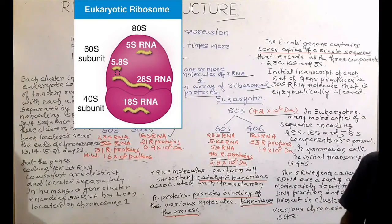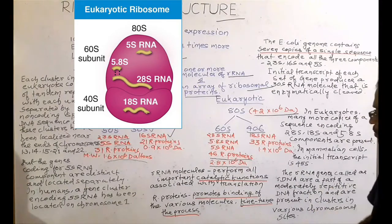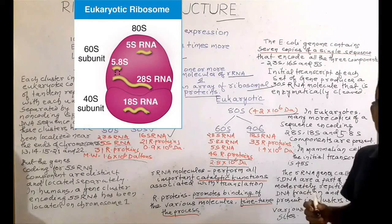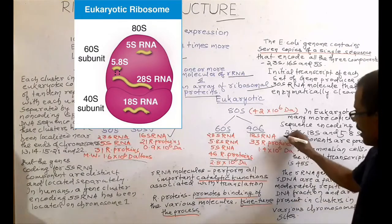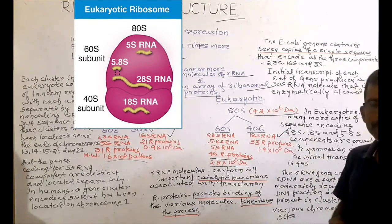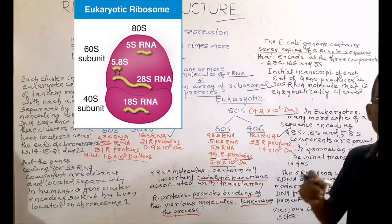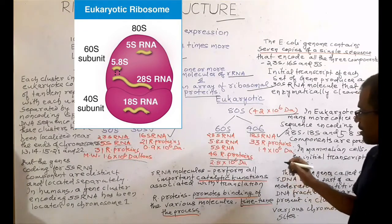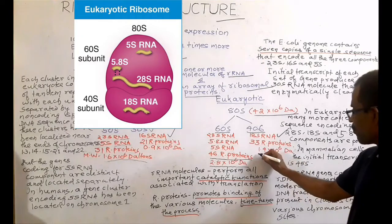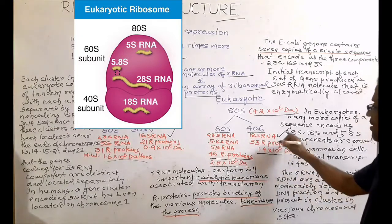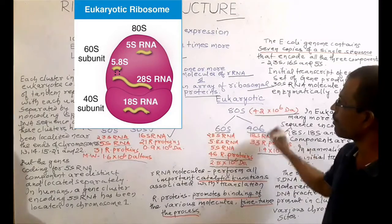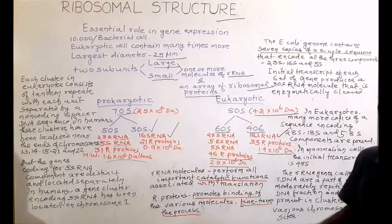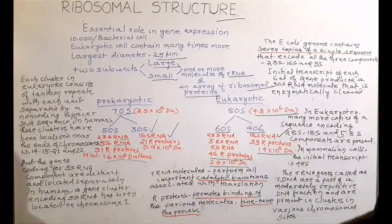The smaller subunit of eukaryotic ribosome consists of a molecule of 18S RNA and 33 ribosomal proteins. Its approximate molecular weight is 1.4 × 10^6 Dalton. This is about various components of a eukaryotic ribosome.